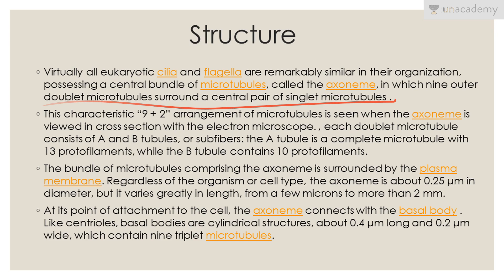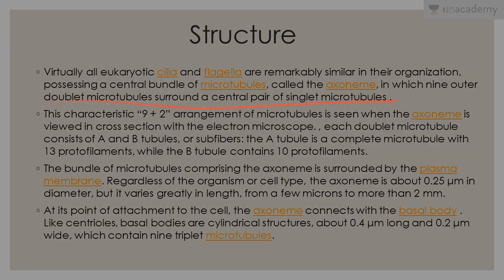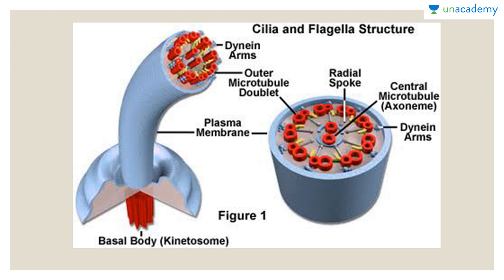Each doublet microtubule consists of A and B tubules, or sub-fibers. The A tubule is a complete microtubule with 13 protofilaments, while the B tubule contains only 10 protofilaments. That is why the A microtubule is bigger and the B tubule is somewhat smaller by comparison.